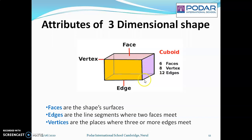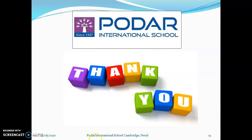These are the vertices — you can see these corners. Faces are the shape surfaces. Edges are the line segments where two faces meet. And vertices are the places where three or more edges are meeting. So this corner is called the vertex. I hope you enjoyed this lesson. Thank you so much.